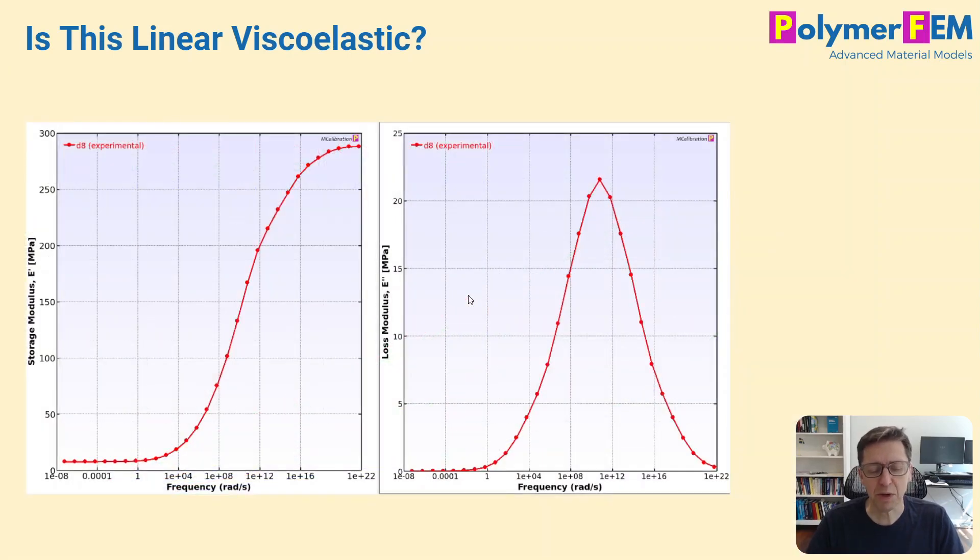How about this case? What if we have a DMA frequency sweep data? So this is storage modulus and loss modulus as a function of frequency. If this is the data that you have for a material, then in that case you can definitely use linear viscoelasticity,